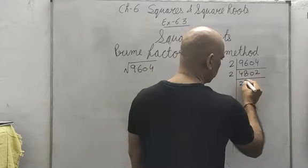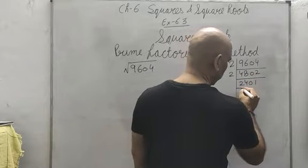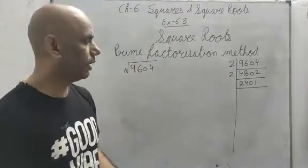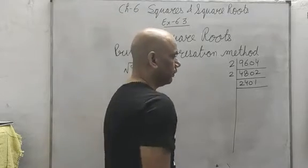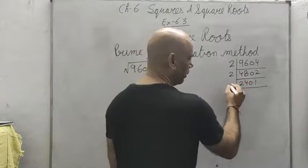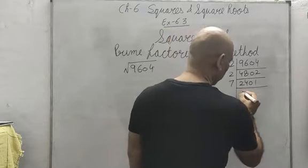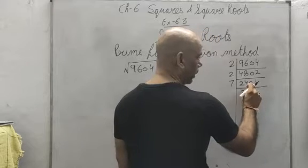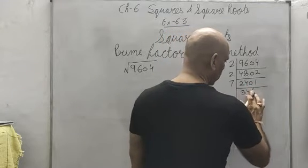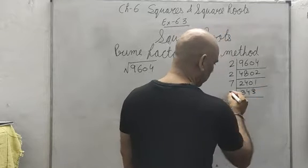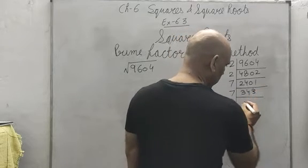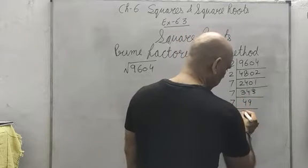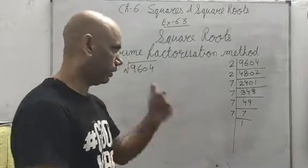9604 ÷ 2 = 4802, ÷ 2 = 2401. Now it cannot be divided by 2 because it is odd. It cannot be divided by 3 or 5 either. Checking 7: 2401 ÷ 7 = 343, ÷ 7 = 49, ÷ 7 = 7, ÷ 7 = 1. So it can be divided by 7 four times.